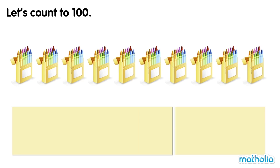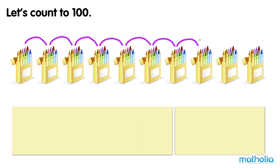There are 10 boxes of crayons. How many crayons are there? 10, 20, 30, 40, 50, 60, 70, 80, 90, 100. There are 100 crayons. 10 tens equals 100.